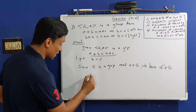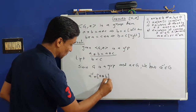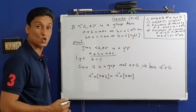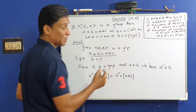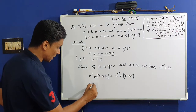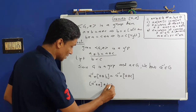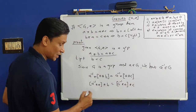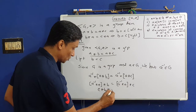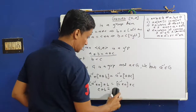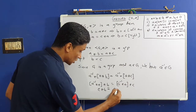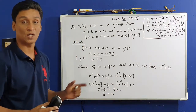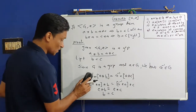Using the associativity property, we apply A-inverse on the left: A-inverse★(A★B) = A-inverse★(A★C). This gives (A-inverse★A)★B = (A-inverse★A)★C, so E★B = E★C, therefore B = C. This completes the proof for the left cancellation law.